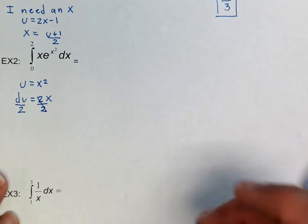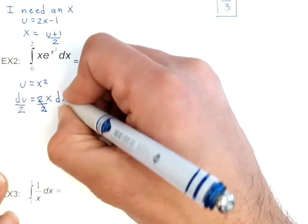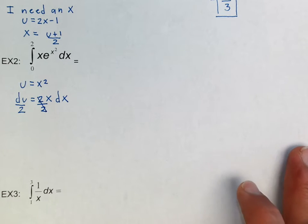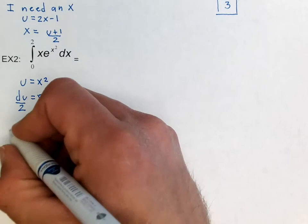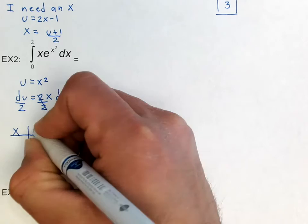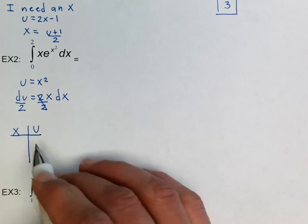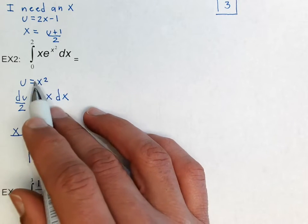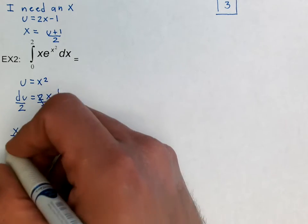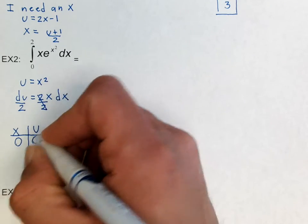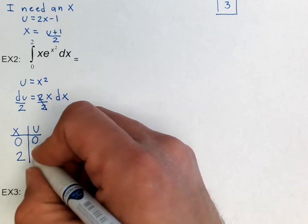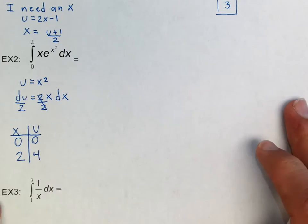So now, I forgot to put a dx here. So now I have du over 2 is equal to x dx. And then, let's go ahead and do this also. Let's go ahead and find the new boundaries. If x is 0, if I plug in a 0, sorry, for x, we've got 0 squared, which is still 0. And if I plug in a 2 here, 2 squared is 4.